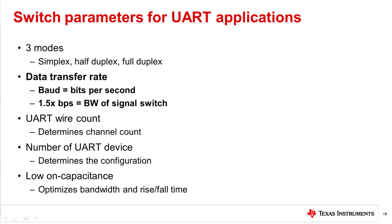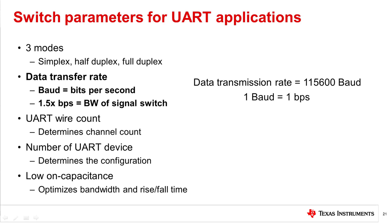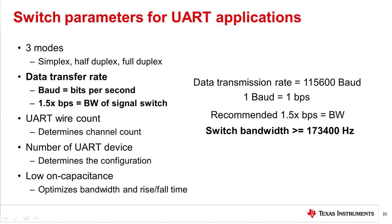Since this is a binary serial protocol, the baud will equal the bit rate. Typically, this value ranges from 9,600 baud to 256,000 baud, or bits per second. This will also be the frequency used to calculate the bandwidth. It is recommended to pick a switch with a bandwidth at least one and a half times your data rate. For example, for a transmission rate of 115,200 baud — which translates to 115,200 bits per second — a signal switch with a bandwidth of at least 174 kHz is recommended.